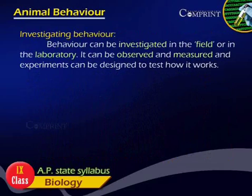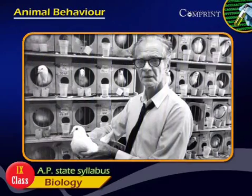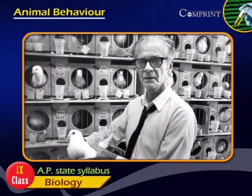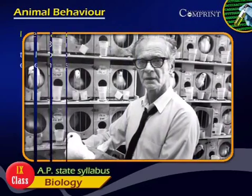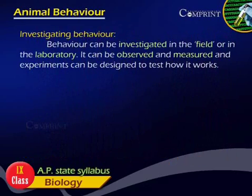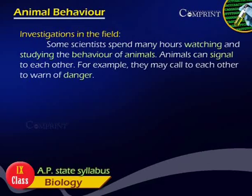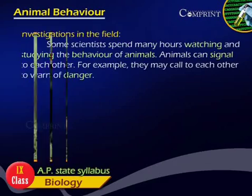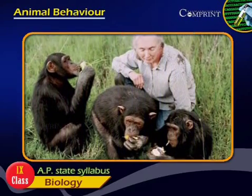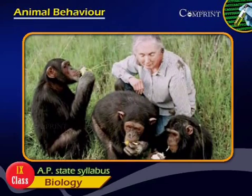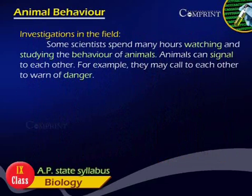Investigating Behavior. Behavior can be investigated in the field or in the laboratory. It can be observed and measured, and experiments can be designed to test how it works. Some scientists spend many hours watching and studying the behavior of animals. Animals can signal to each other — for example, they may call to each other to warn of danger.